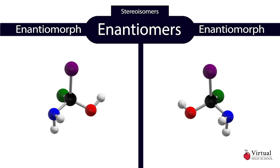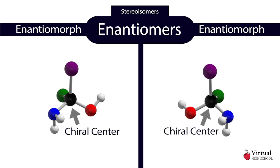To determine what kind of stereoisomers they are, the symmetry of the molecules must be considered. Note that these two molecules are mirror images of one another and are therefore enantiomers. The differences between these two molecules occur around the central carbon, thus making it the chiral center.